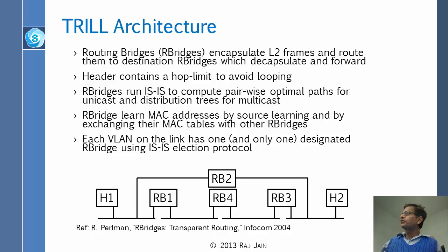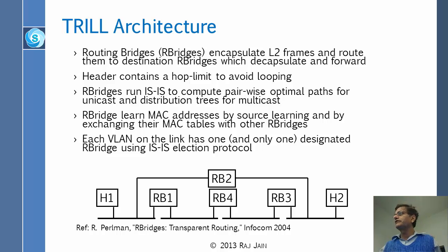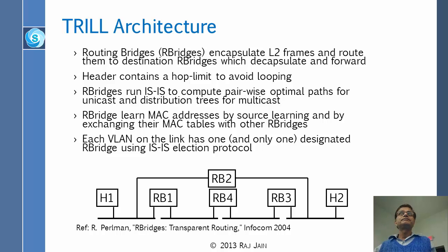RB-bridges learn MAC addresses by source learning and by exchanging their tables with other R-bridges. Each VLAN on the link has one and only one designated R-bridge, using IS-IS selection protocol. When you have two bridges, one of them becomes the designated bridge for a given VLAN. For some VLANs, one bridge might be designated; for other VLANs, the other bridge might be designated. That is how traffic load is distributed between the two bridges.